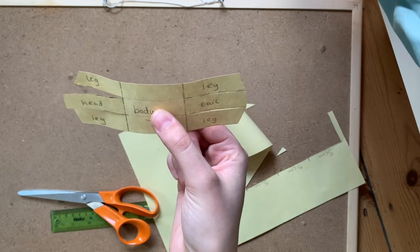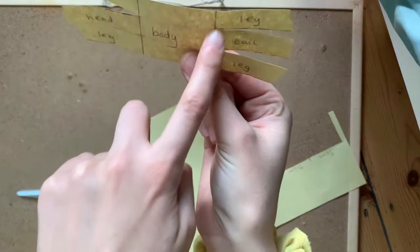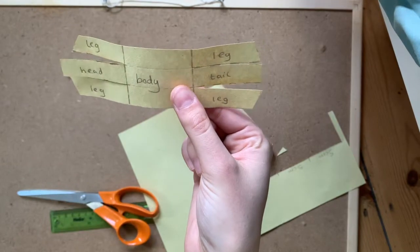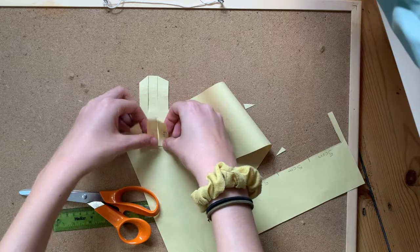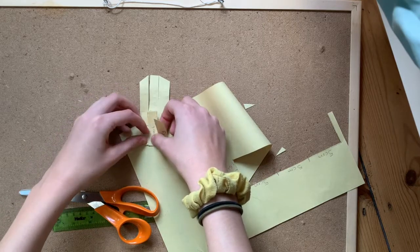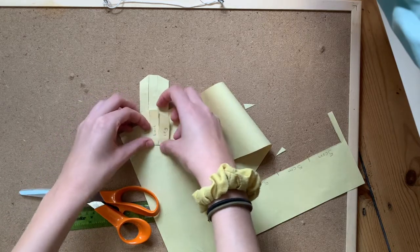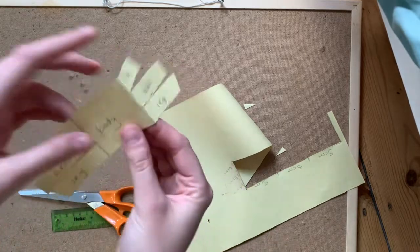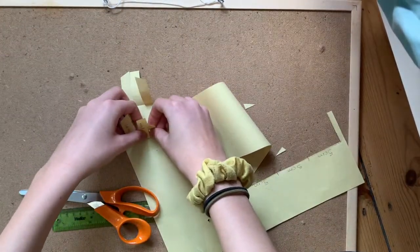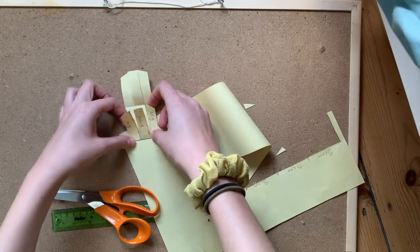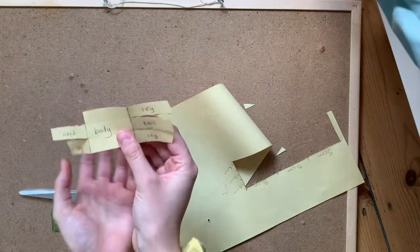So now you should have something that looks like this. So what you are going to do now is along these two lines you are just going to fold them. So I'm going to put it down and I'm going to just fold. Gently, gently, gently. So it looks like that. Now I'm going to fold along the other side. Gently, gently. There we go.